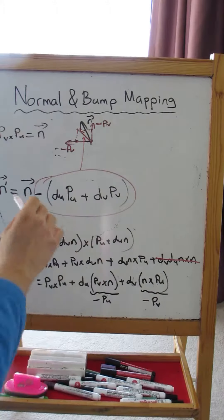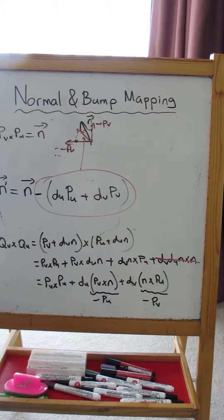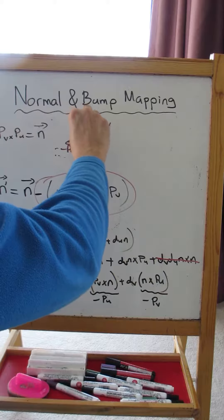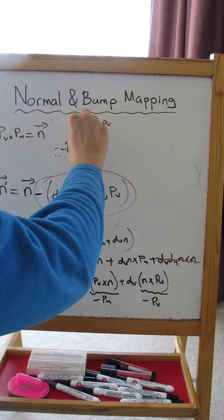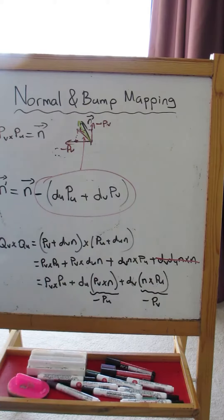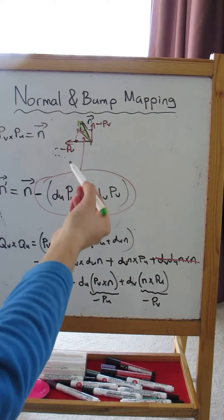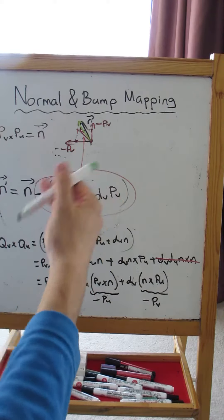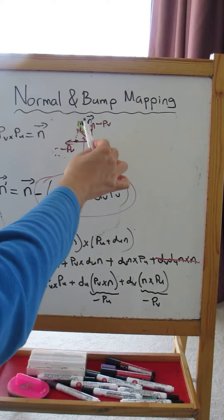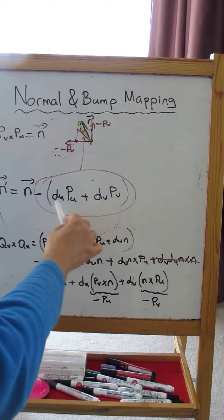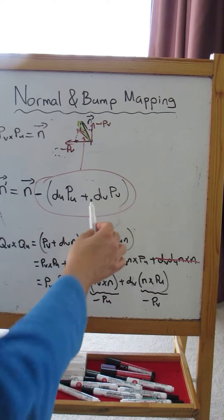So I am adding this vector on n to find the perturbed surface normal. The perturbed surface normal, if you show this with a different color, is going to look like this. The modification, the perturbation, should not make the surface normal point in an opposite direction. It should simply tilt it towards the tangent plane depending on the magnitude of this perturbation.